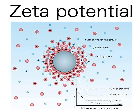In other words, zeta potential is the potential difference between the dispersion medium and the stationary layer of fluid attached to the dispersed particle. The zeta potential is caused by the net electrical charge contained within the region bounded by the slipping plane, and also depends on the location of that plane.